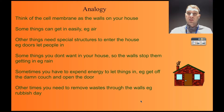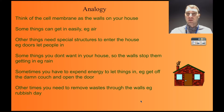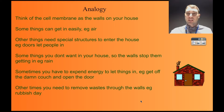We're going to use an analogy when talking about the cell membrane — it's like the walls of a house. Some things can get in easily, like air. Other things need special structures to get in, like doors that let people in. People can't get through the walls without using a door. Some things you don't want in your house, so we've got walls that stop them coming in — rain, for example.